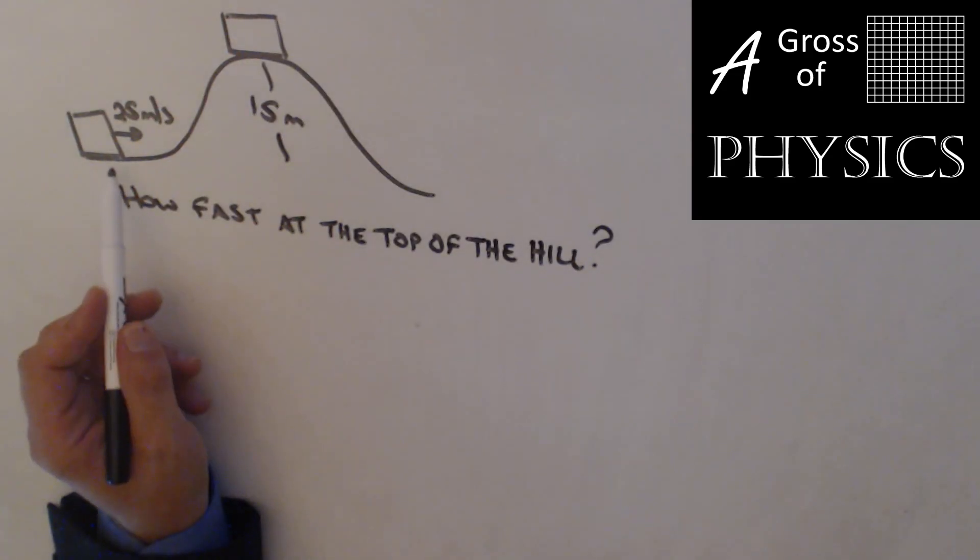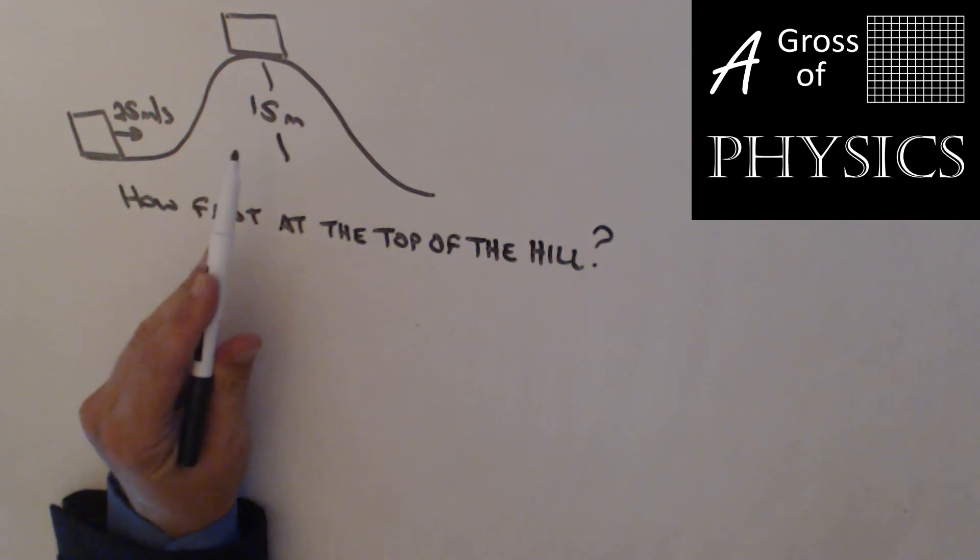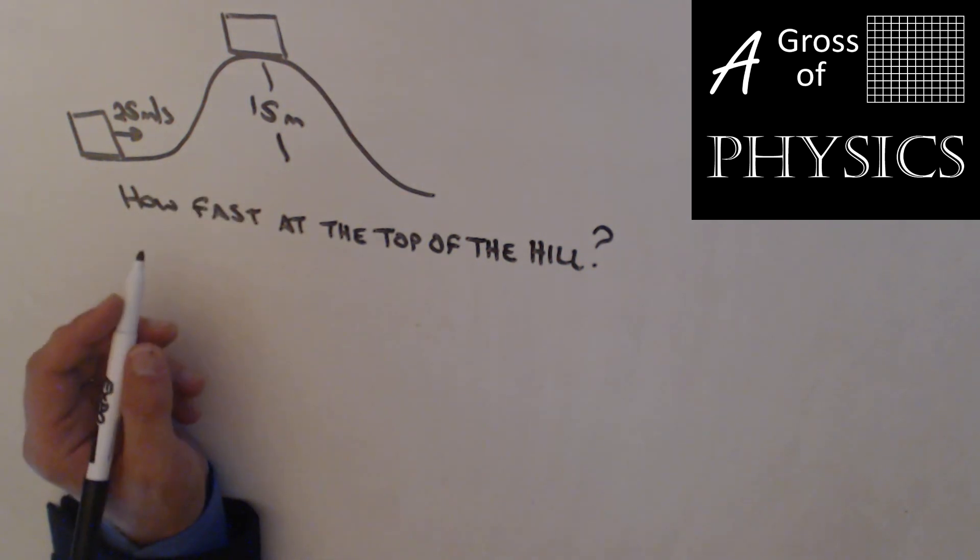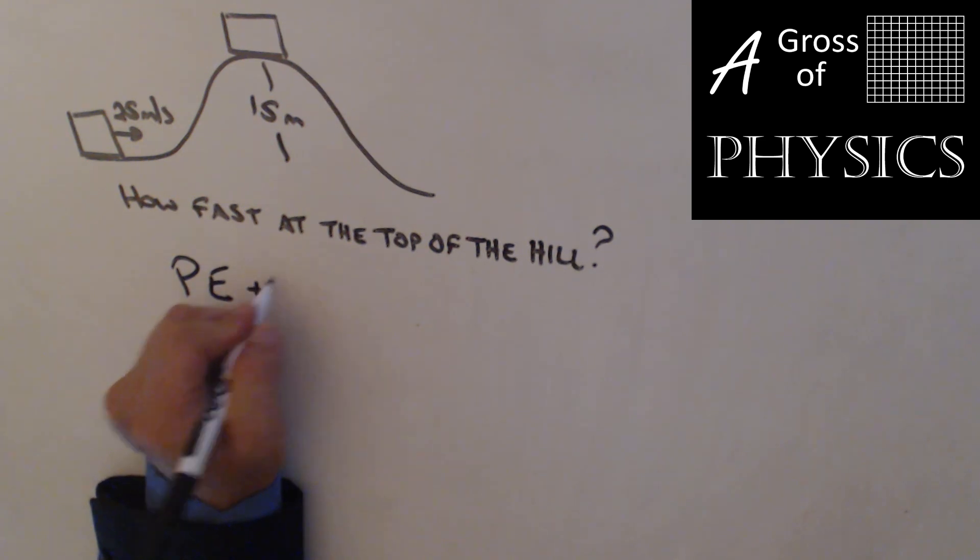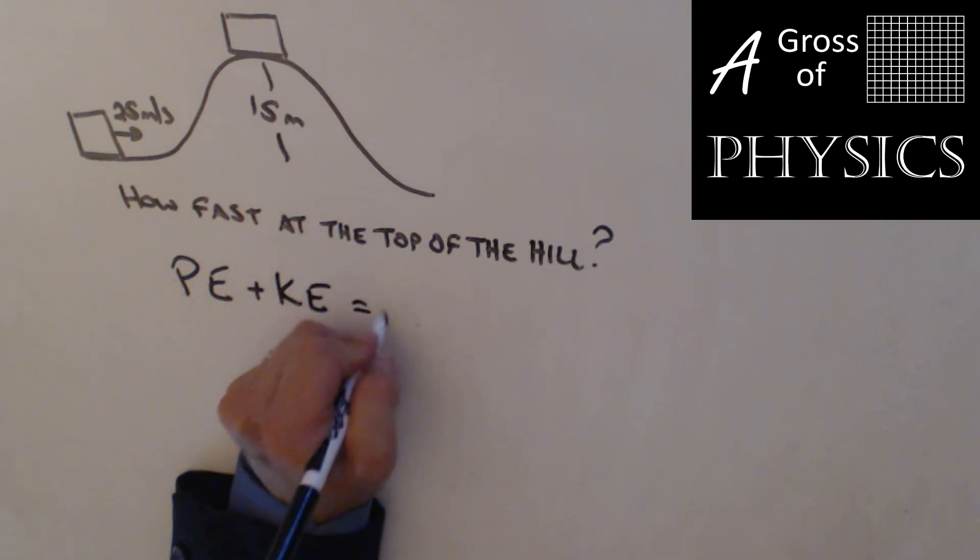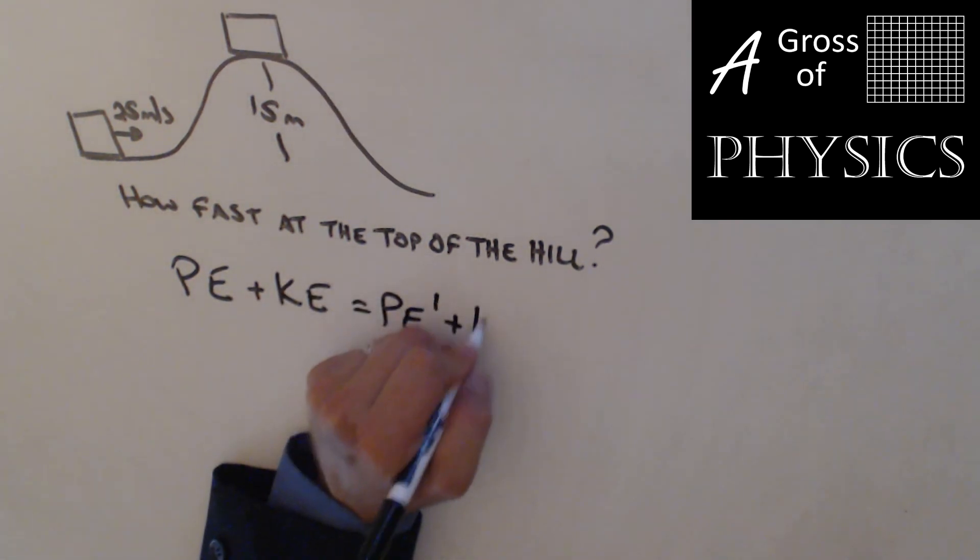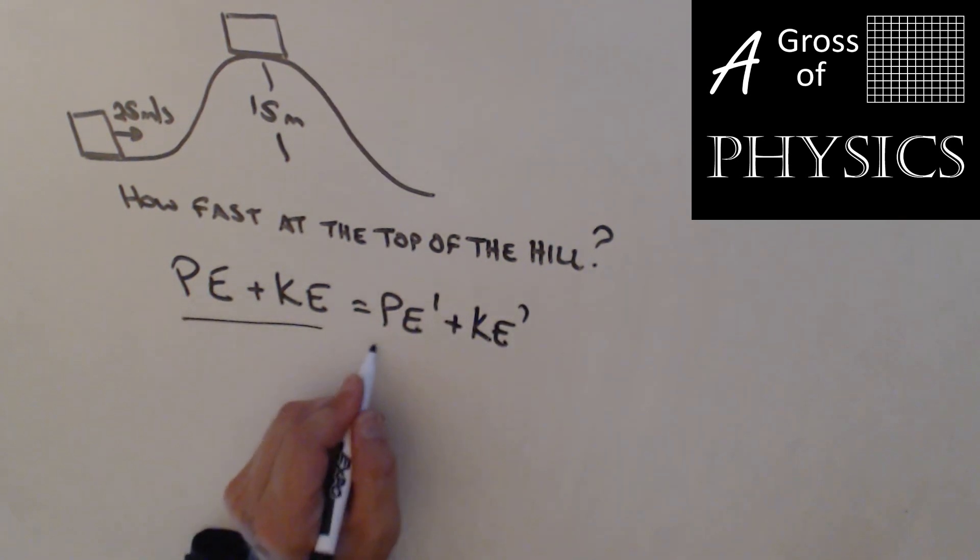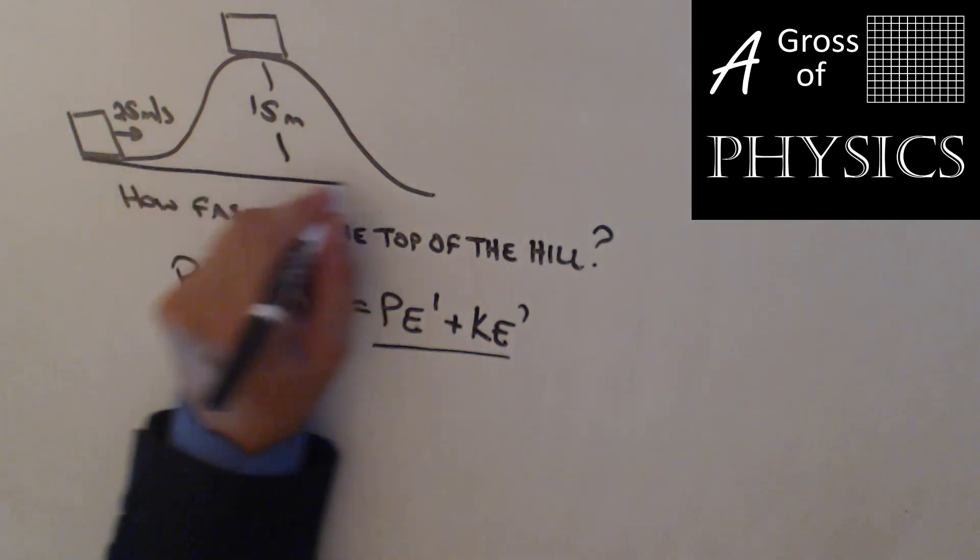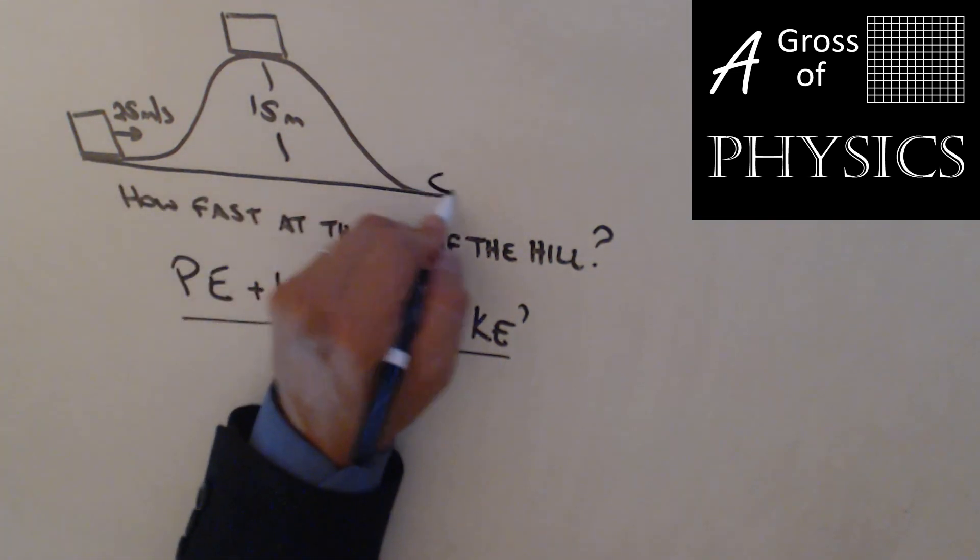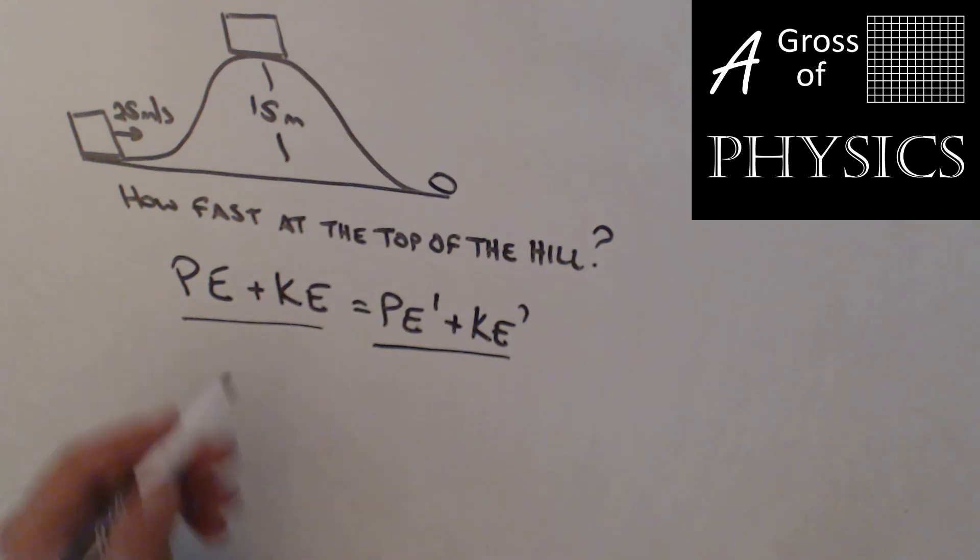Now here's a standard problem where we have an object traveling at 25 meters per second initially, and it's going to go up a hill, and we want to figure out how fast the vehicle is traveling at the top of the hill. Now we have to decide with our PE-KE equation—and remember, left side is initial, right side is final—what terms we have and what terms cancel out. I'm going to define the bottom of the hill as my zero, and I'm going to call the top of the hill 15.